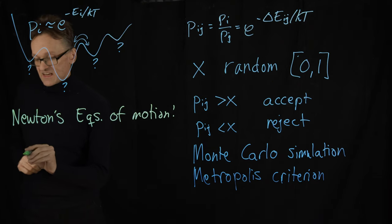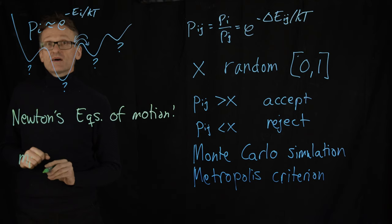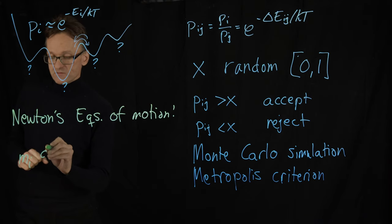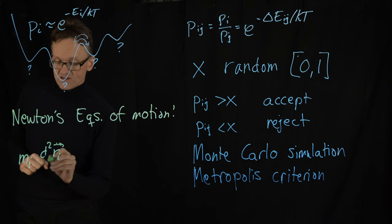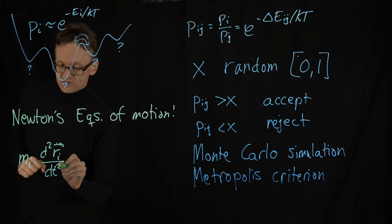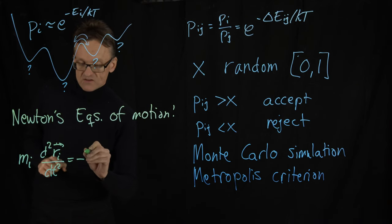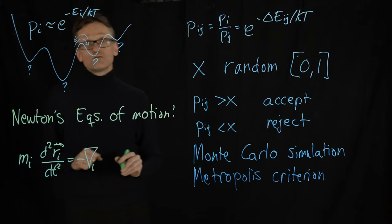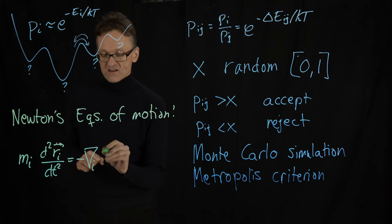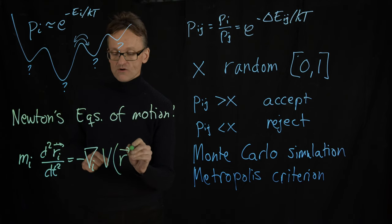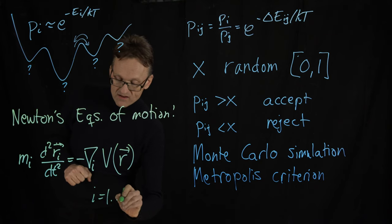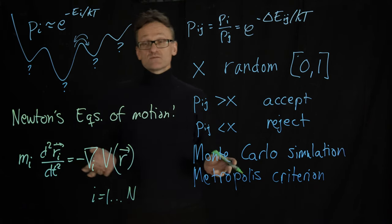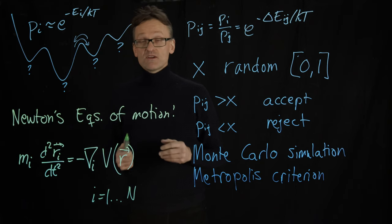I'll formulate this in a slightly more formal way though. Each atom has a mass mi that we multiply by the second derivative of the vector coordinates of that atom with respect to t. That should equal minus the gradient taken with respect to coordinates i of the potential that is a function of all coordinates. And then i will be in the range 1 to n, where n is all the atoms in the system, and that can be 10,000, 100,000, or even a million.